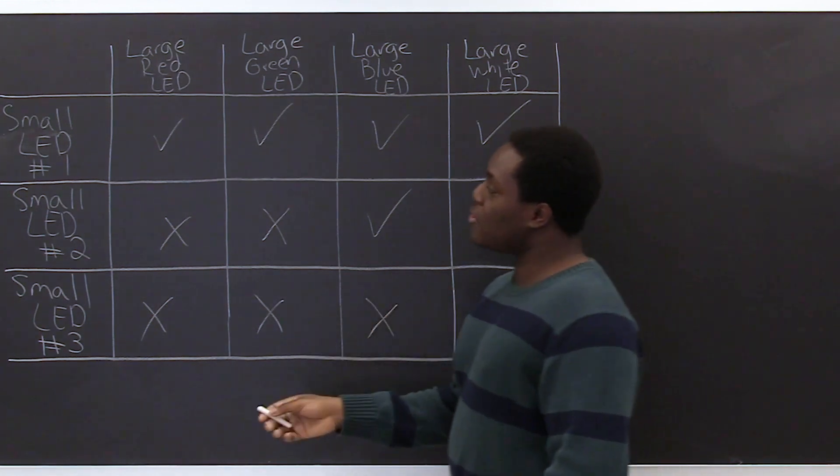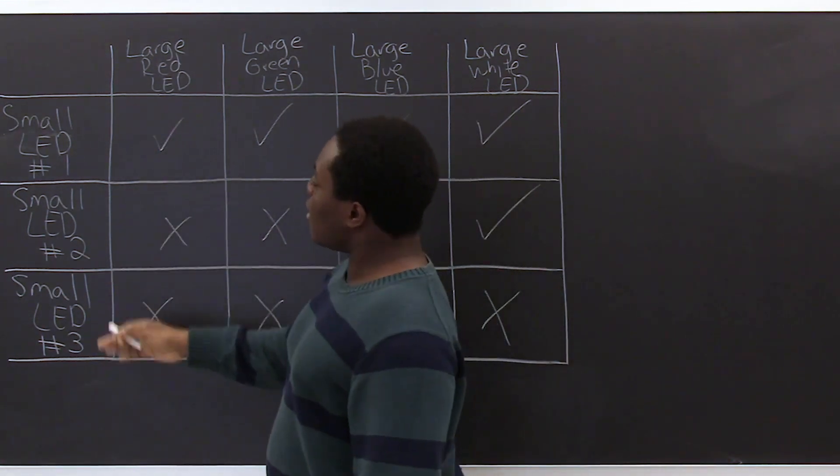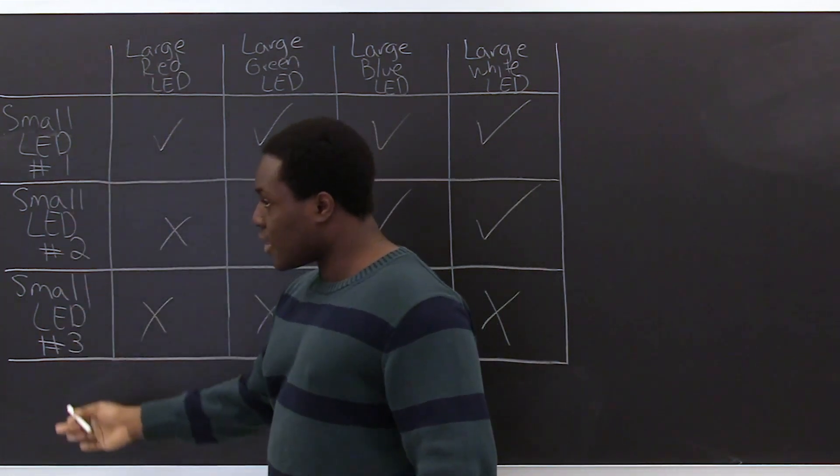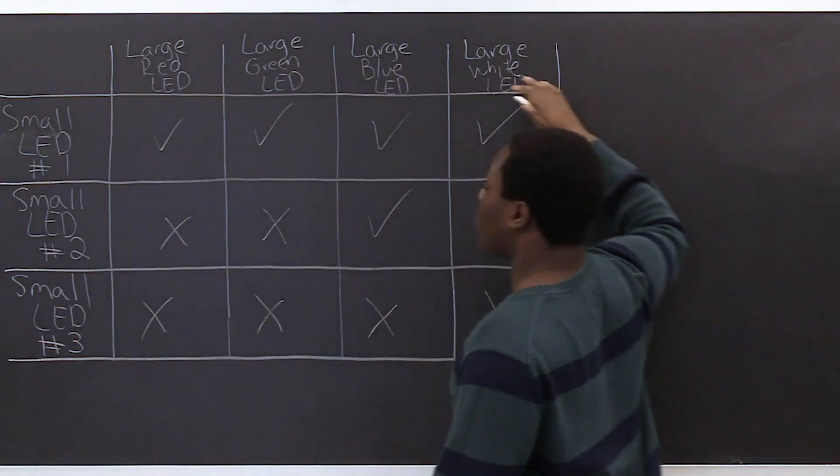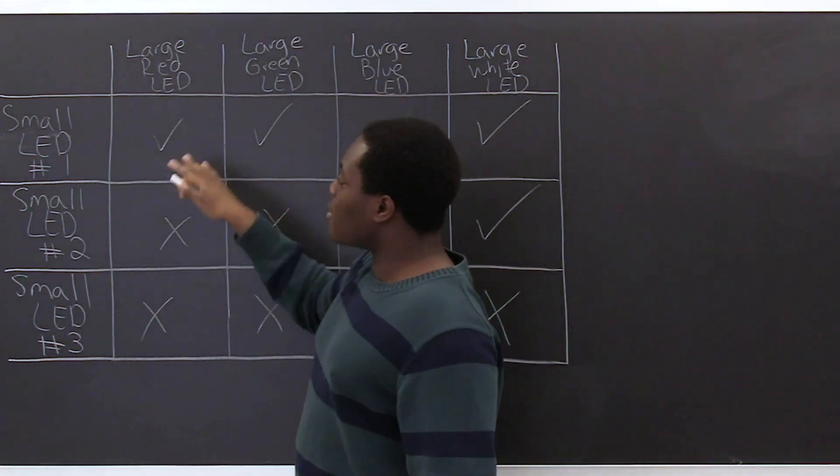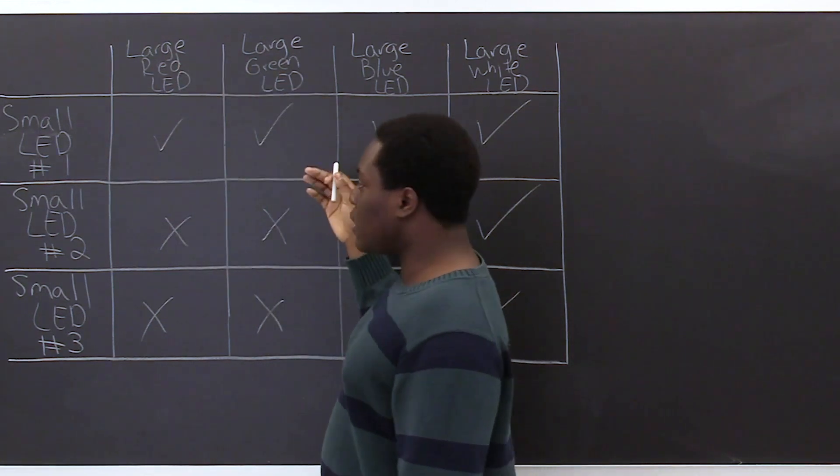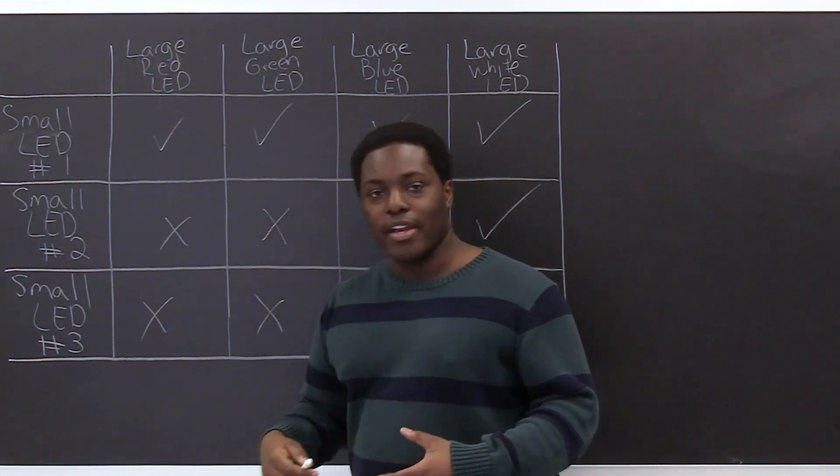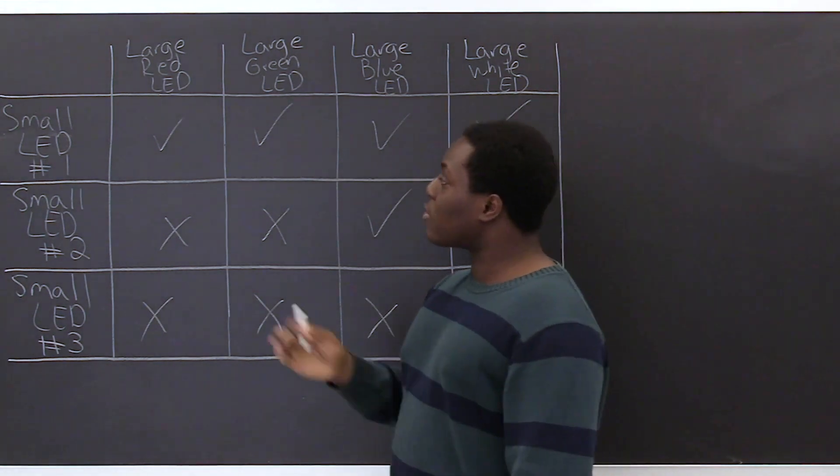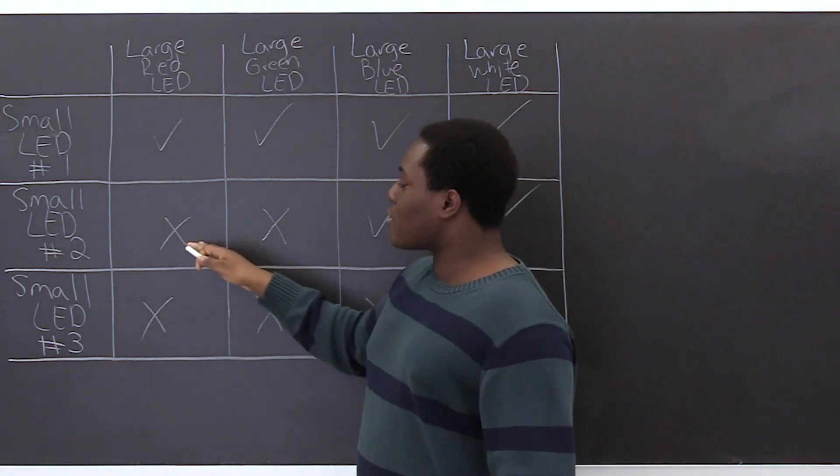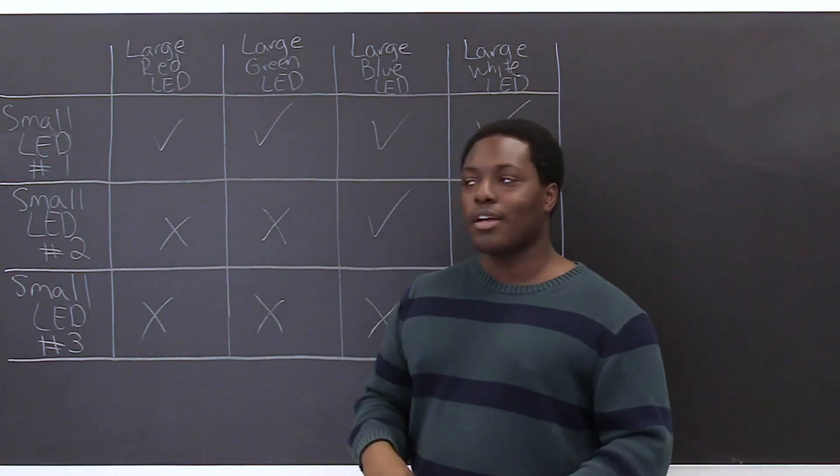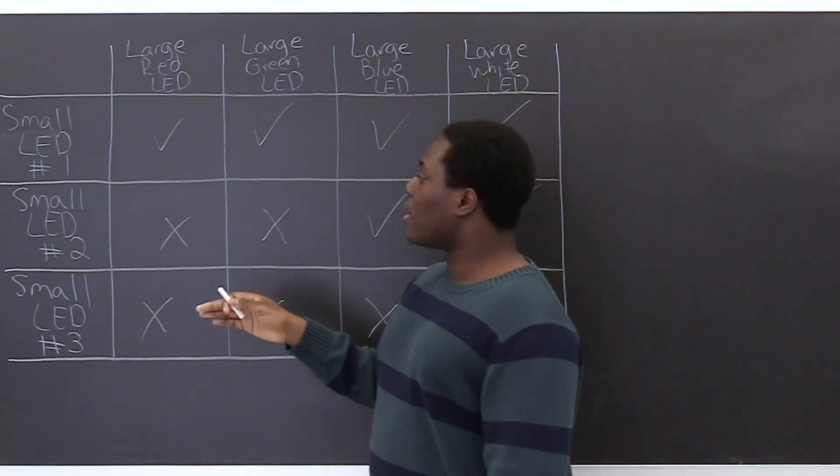So after running through your experiments you should have some chart that looks like mine where I have my small LEDs going down the side here and the large LEDs going across. So each square represents a time when a small LED was irradiated by a large LED and a check represents when a non-zero voltage was measured across the multimeter and an X represents when there was a zero or very low voltage reading across the LED.